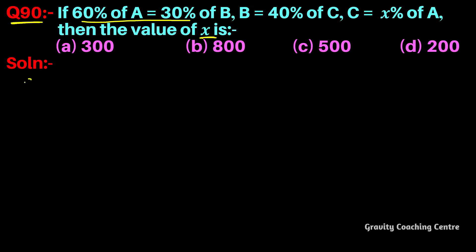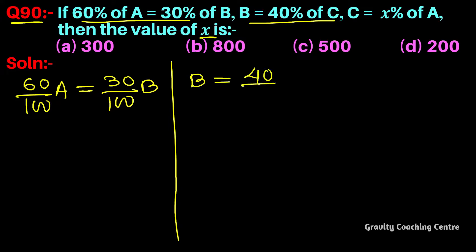Equals 30, so this is 60 upon 100 into A equals 30 by 100 into B. And the second part is B equals 40 percent of C, and the last part is C equals x percent of A.